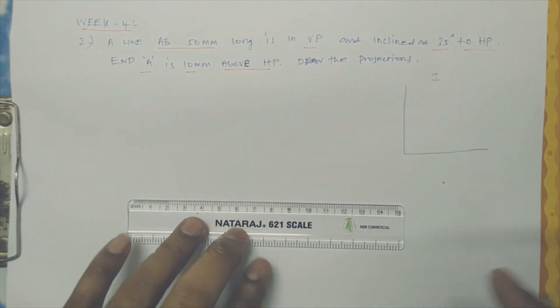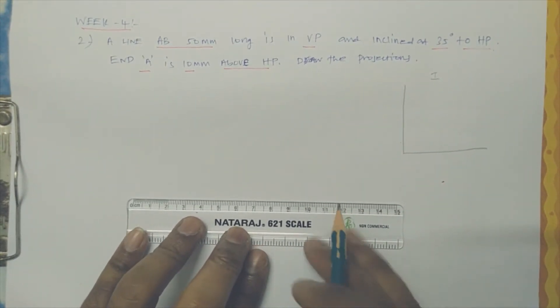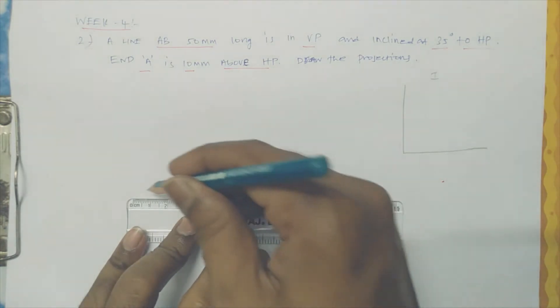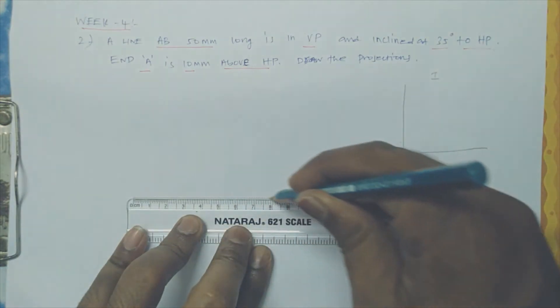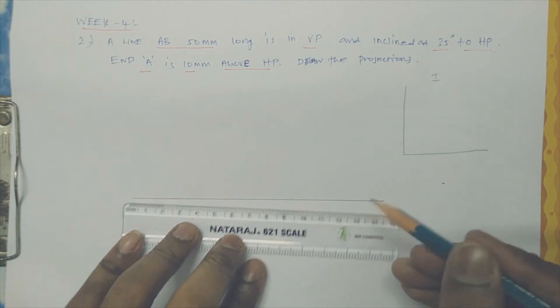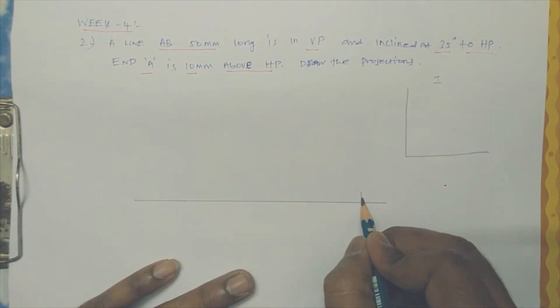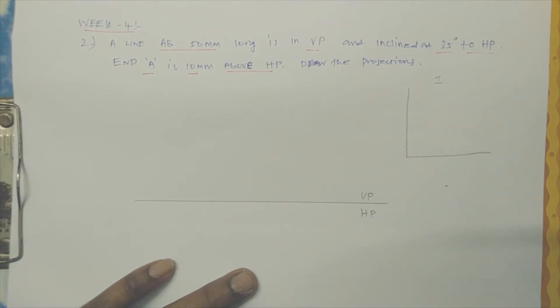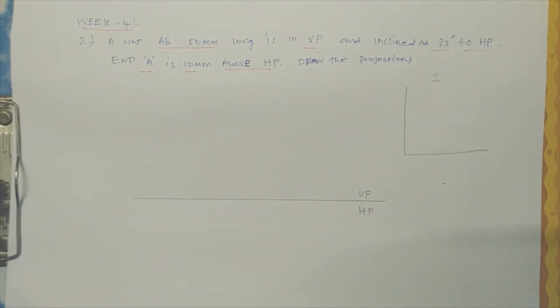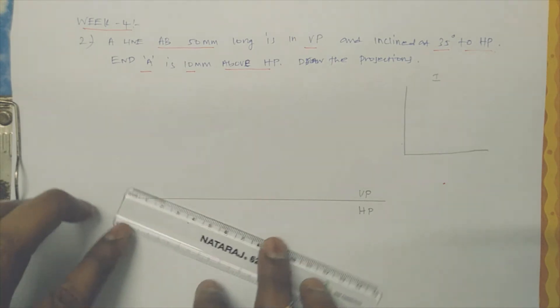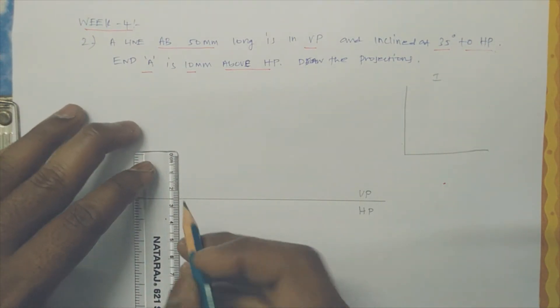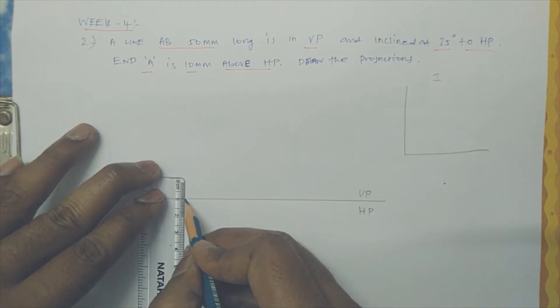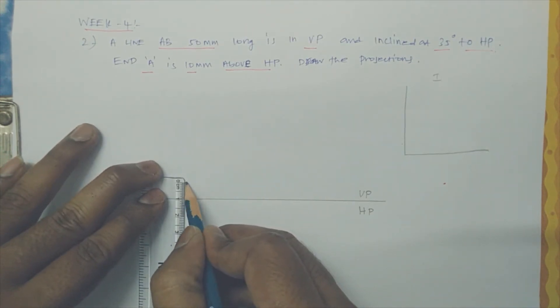Whenever you are drawing the line, just specify horizontal plane and vertical plane. Let us draw one reference line. This one is VP, this one is HP - horizontal plane, vertical plane. Profile plane is available but not covered for your syllabus. Let us draw, end A is 10mm above, let us locate end A, so 10mm above HP.